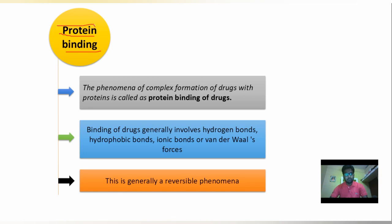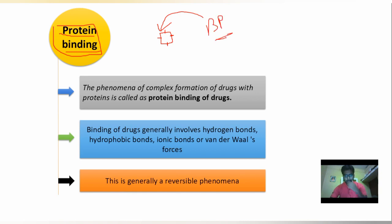Protein binding means when a drug is absorbed, after absorption, the drug molecules are going to bind on the surface of proteins. These proteins are present in the blood plasma. The incidence of binding of the drug to the plasma protein is known as protein binding.